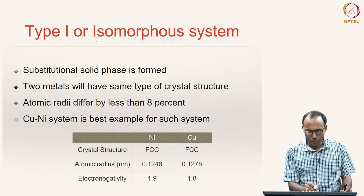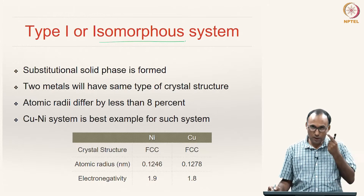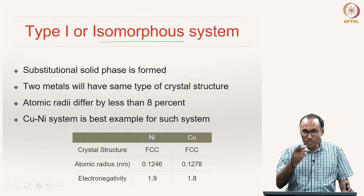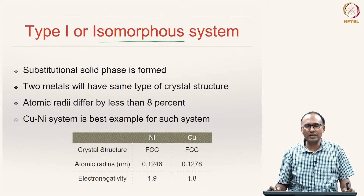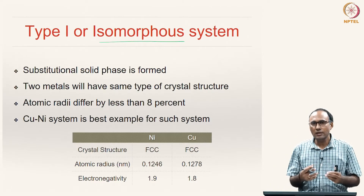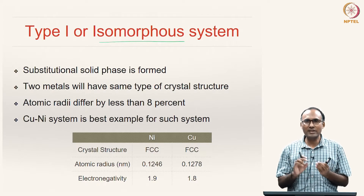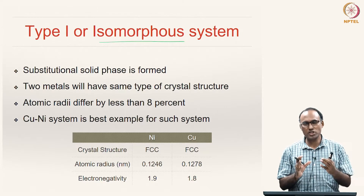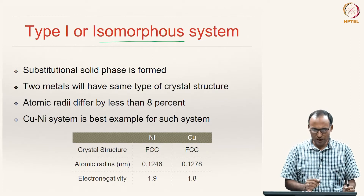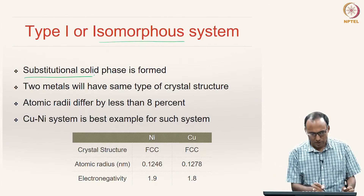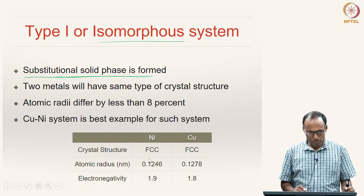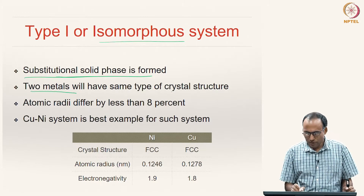Now we look at Type 1, or isomorphous alloys. Isomorphous alloys are the ones which have complete solubility in both the solid state and the liquid state. As we have seen with the Hume-Rothery rules, 100 percent solubility is possible only when the atoms are of similar sizes. When atoms are of similar sizes, it is more probable to form a substitutional solid solution, because forming an interstitial solid solution would require creating a lot of distortion.